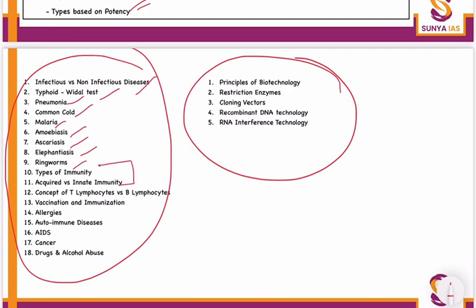Then do the types of immunity — the barriers concept mentioned in NCERT, and the difference between acquired immunity and innate immunity. In the process of immunity, we have two kinds of cells: T lymphocytes and B lymphocytes — do the difference between them. How they perform functions during the primary and secondary immune response will be done in the next class.